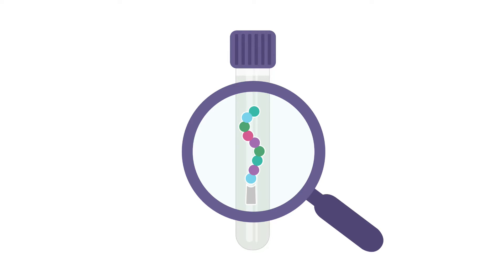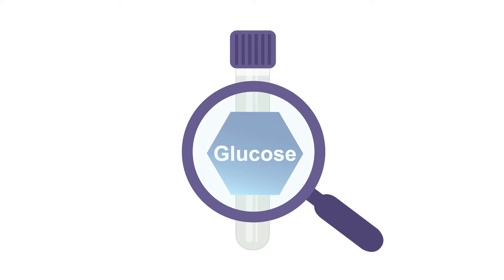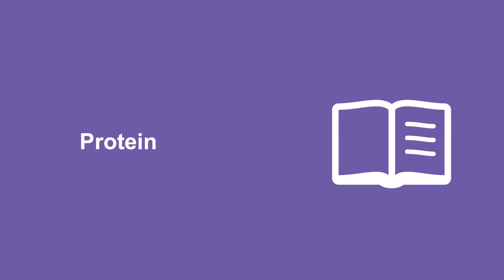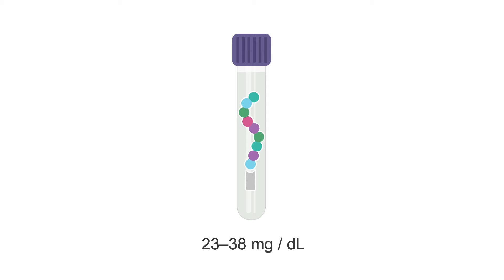Determination of cerebrospinal fluid protein and glucose concentrations are routinely done and may reveal useful clinical information. The normal CSF protein concentration ranges from 23 to 38 milligrams per deciliter in adults.